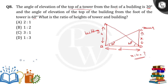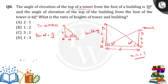The building and the tower both stand vertically on the ground. In triangle ABD, this is point A, B, D — the angle at B is 90 degrees and the angle at D is 60 degrees. The height of the building is H and the base is D. Applying tan: tan 60 equals H by D. Tan 60 is root 3, so root 3 equals H by D, giving H equals root 3 times D.